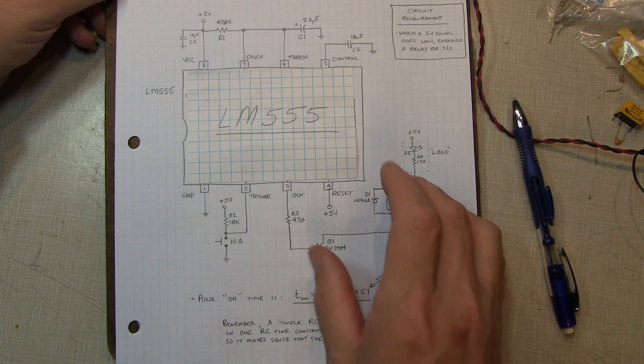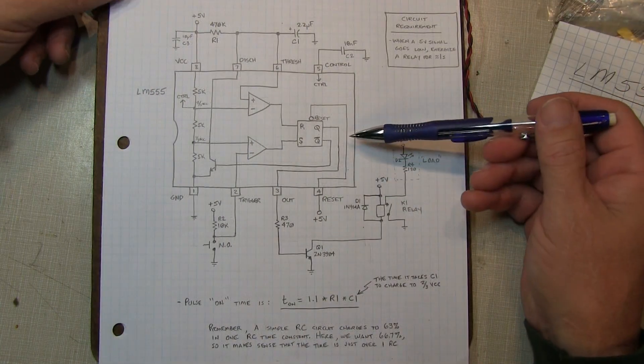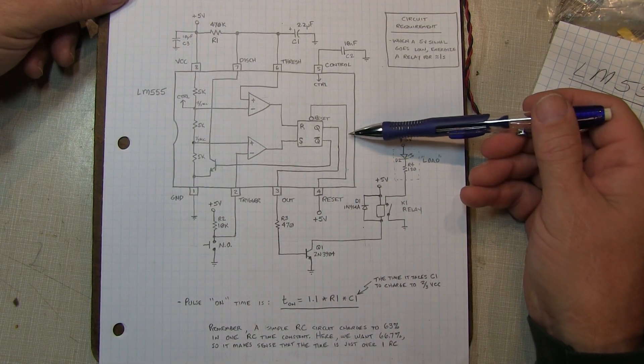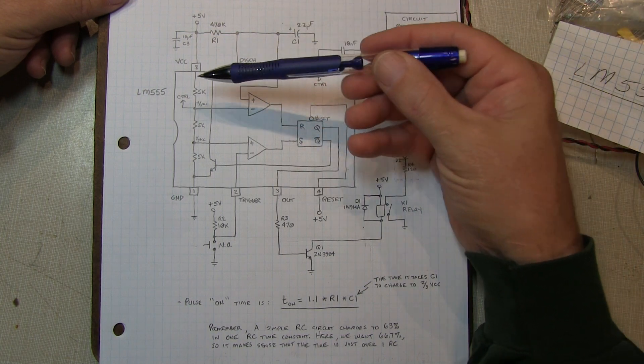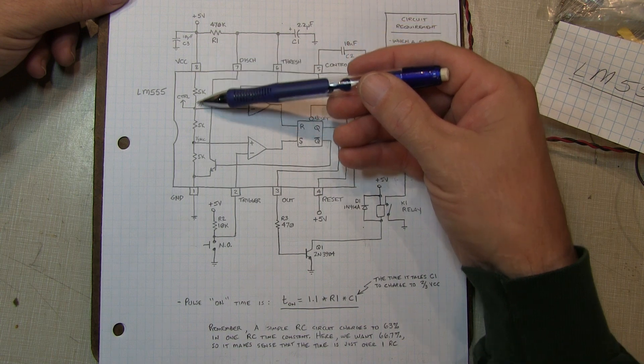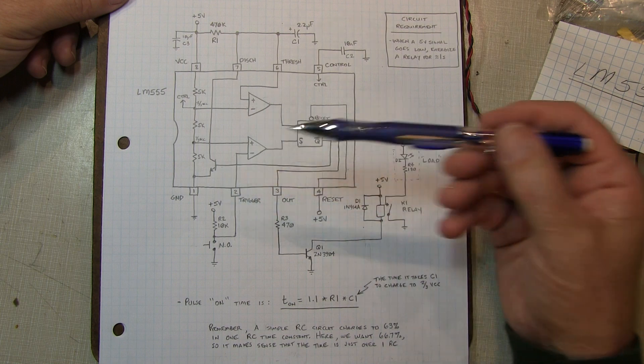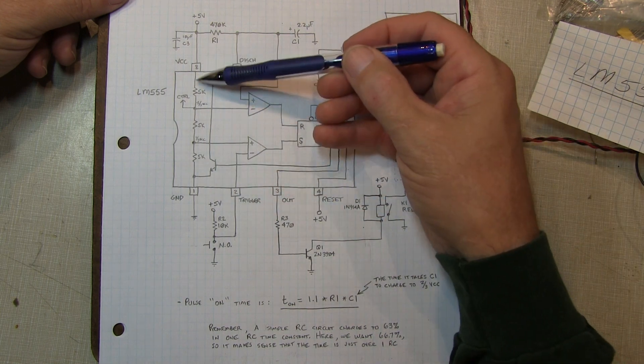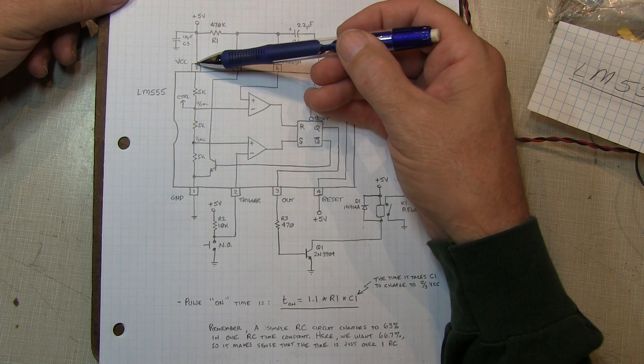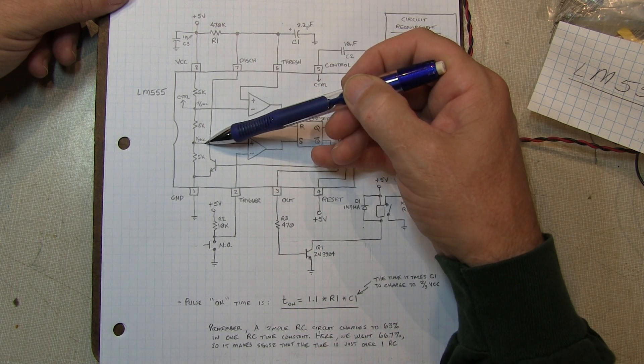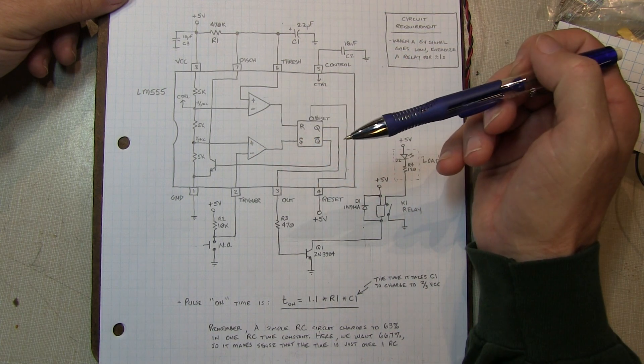Let's take a look inside the 555 and see what's going on. By revealing the functional circuit diagram of the 555, we can easily see how this monostable multivibrator works. The 555 consists of a little resistor string here, a pair of comparators, an RS flip-flop, and a transistor. The resistor string simply sets up a voltage divider so that one-third of VCC appears here, two-thirds of VCC appears here, and those are inputs to these two comparators.